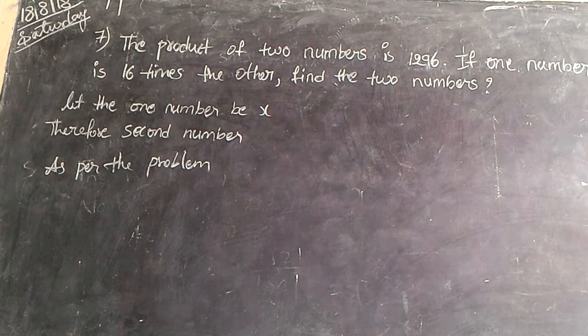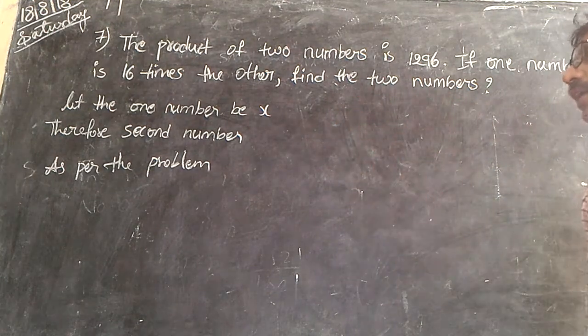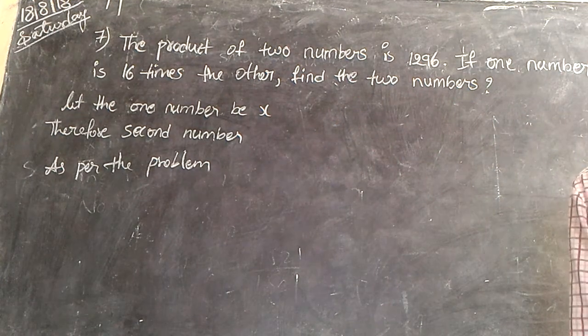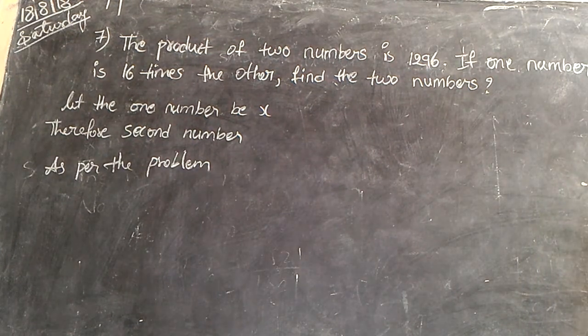The product of two numbers is 1296. If one of it is 6 times the other, one number is 6 times the other, find the two numbers.